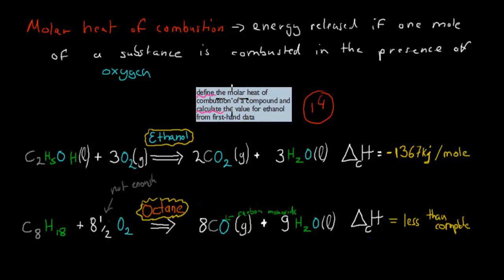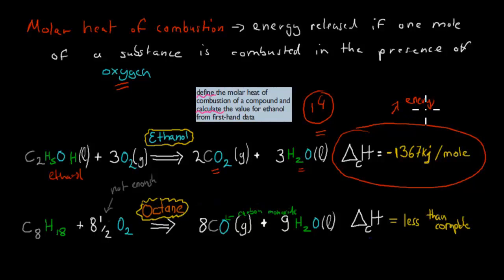Define the molar heat of combustion of a compound and calculate the value for ethanol from first-hand data. Molar heat of combustion is the energy released if one mole of a substance is combusted in the presence of oxygen. We need to have enough oxygen present for molar heat of combustion to occur to its fullest. Here I've got two examples. We've got ethanol, which combusts with oxygen to release carbon dioxide, two molecules, three molecules of water, and this is the energy produced: 1367 kJ per mole, this is the energy released. Now this is complete combustion, and we know that because it only produces carbon dioxide.